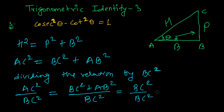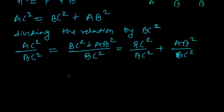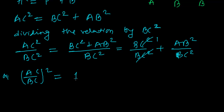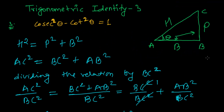Let me separate this individually: BC squared upon BC squared, plus AB squared upon BC squared. So AC upon BC whole squared equals one, plus AB upon BC whole squared.